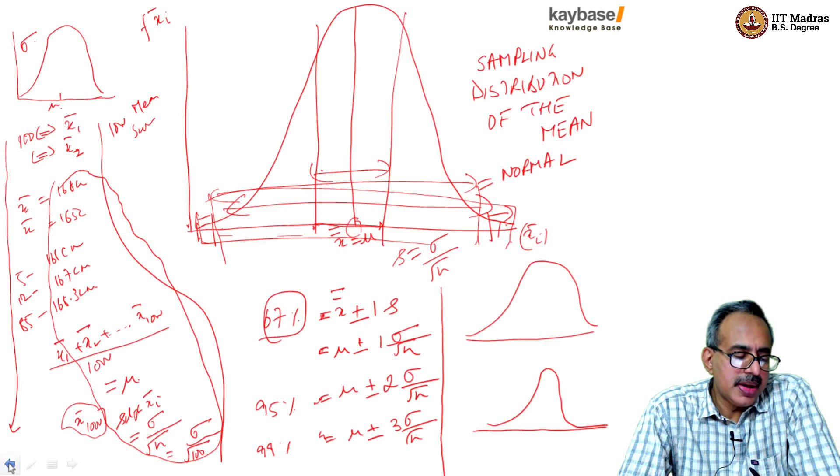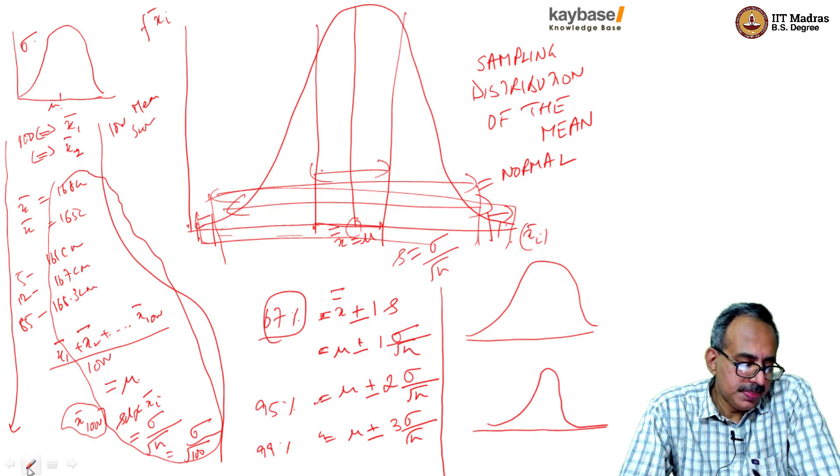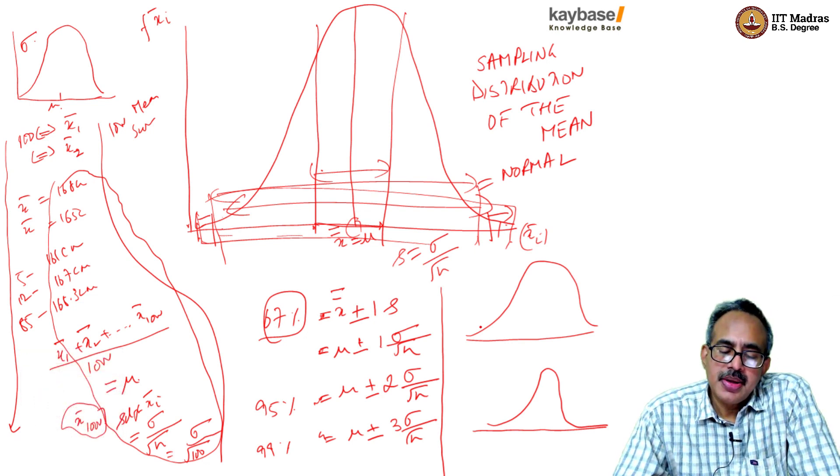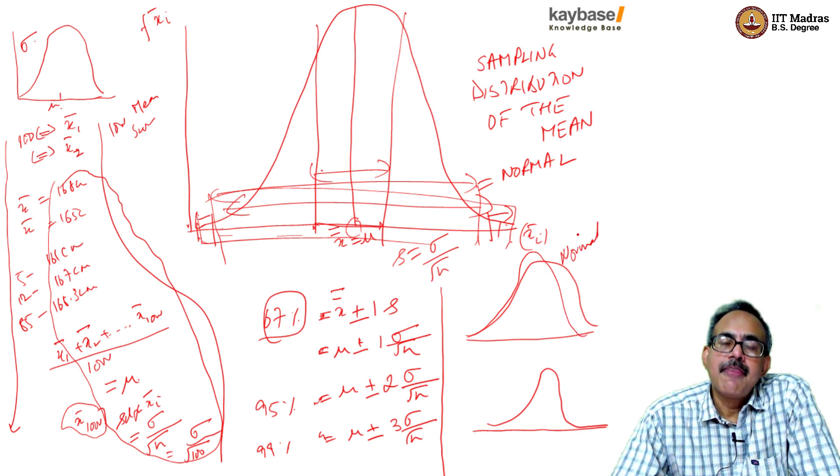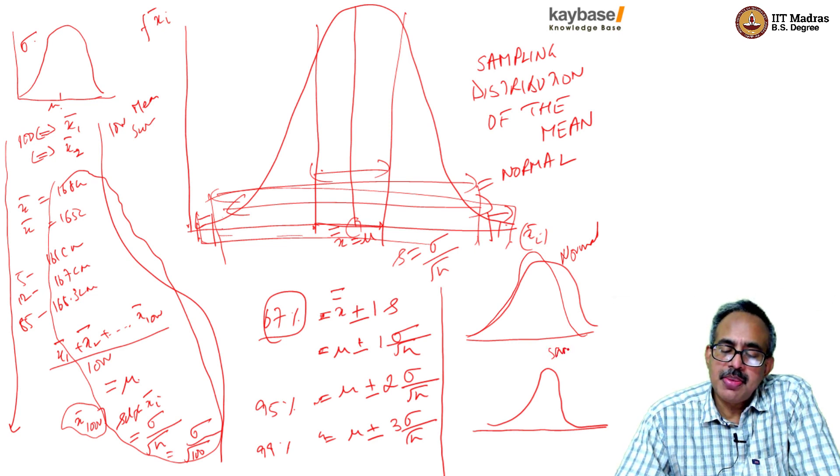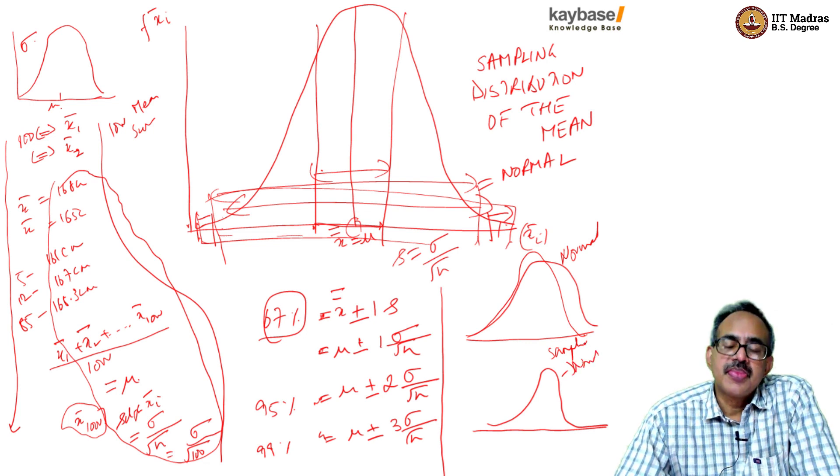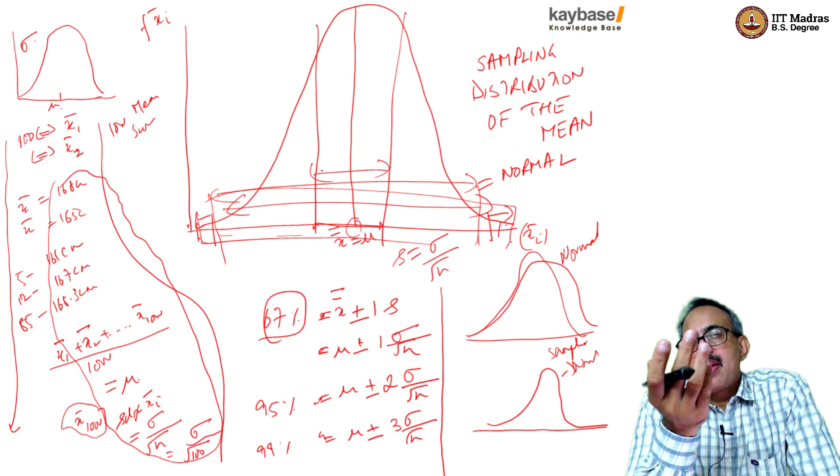Hi. So we have seen at some length what a normal distribution is, what the sampling distribution is, and more importantly, the significance of sampling distribution. Now let's go back to one slide. If you remember, we started by saying that the original distribution is a normal distribution of height, from which we did the sampling distribution and that also came up to be normal. And we also said most distributions in nature are normal.